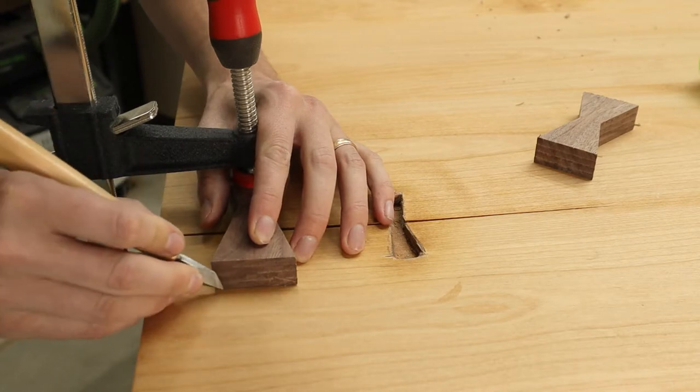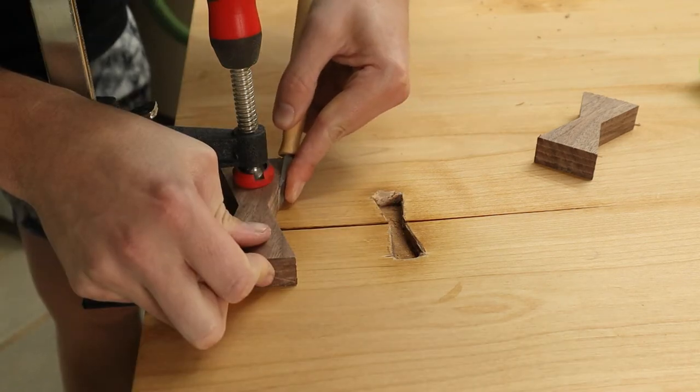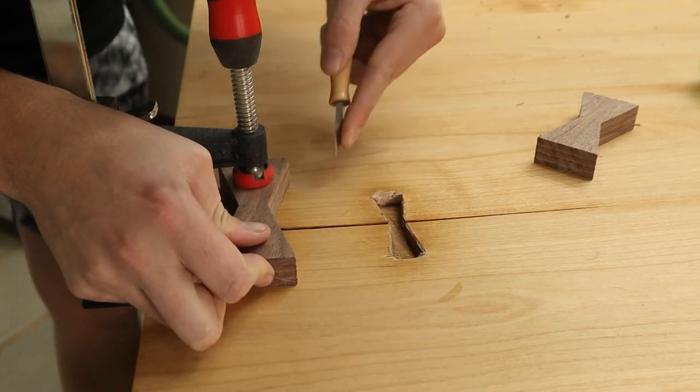With the marking knife, you want your first pass to be nice and gentle so you don't get off course. And then from there, you kind of dig down a little harder each pass.